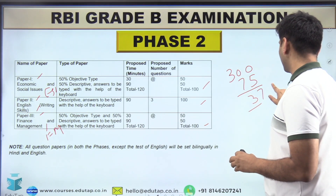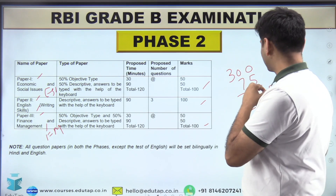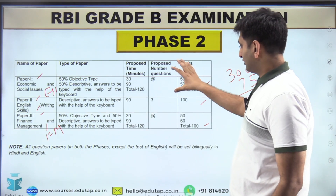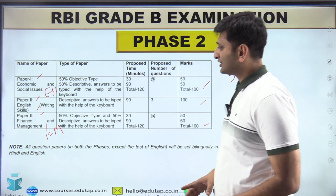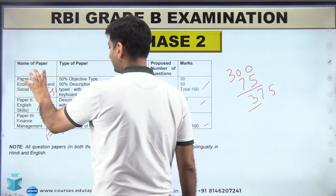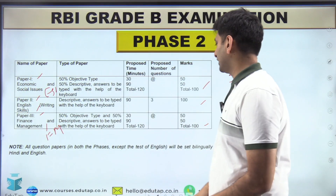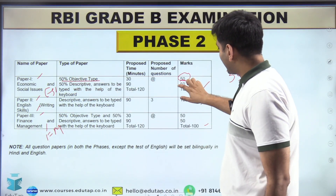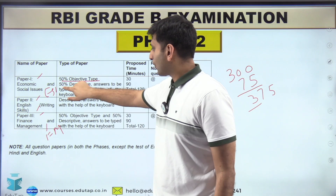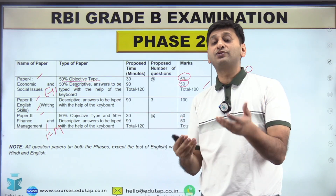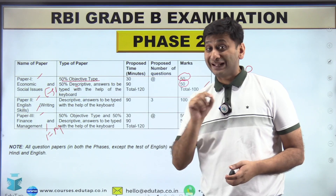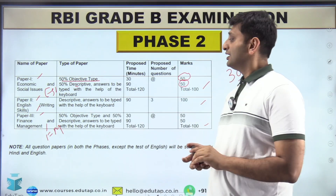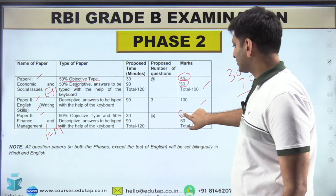All three papers are 100 marks each, making 300 in total. The interview is 75 marks, making a total of 375 marks. Your merit list is based on these 375 marks. For ESI and FM, out of 100 marks, 50 marks is objective and 50 marks is descriptive — long answer questions that you have to type on your computer using a keyboard.